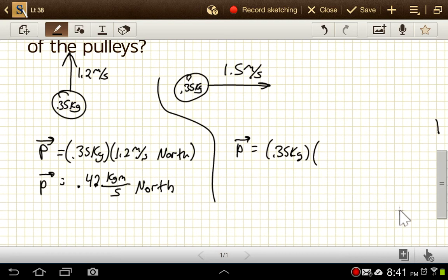1.5 meters per second. This one's to the east. And so the momentum vector is going to be 0.35 times 1.5 is 0.525 kilogram meters per second east.